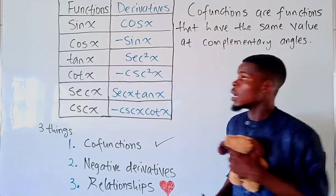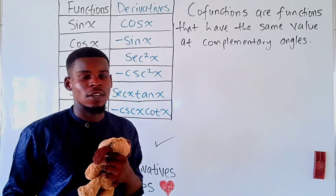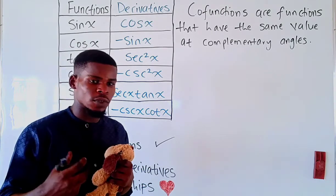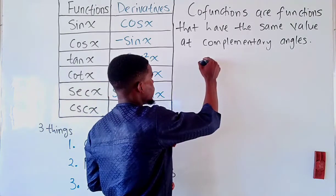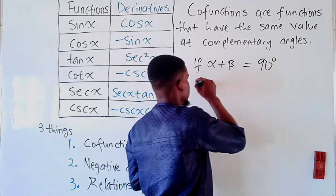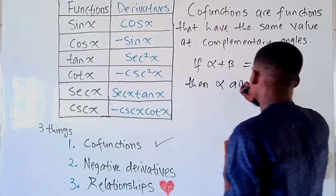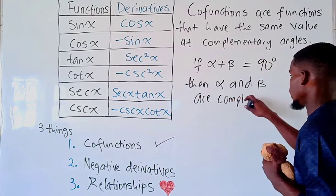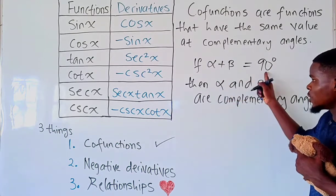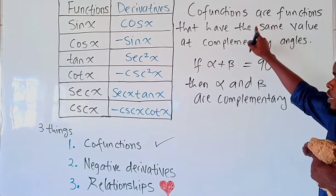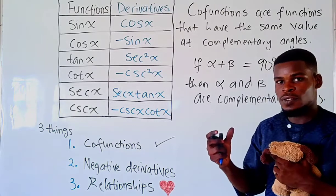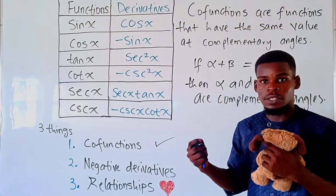In the context of trigonometric functions, co-functions are functions that have the same value at complementary angles. Two angles are said to be complementary if the sum of those two angles gives us 90 degrees. For example, if alpha plus beta equals 90 degrees, then alpha and beta are called complementary angles.